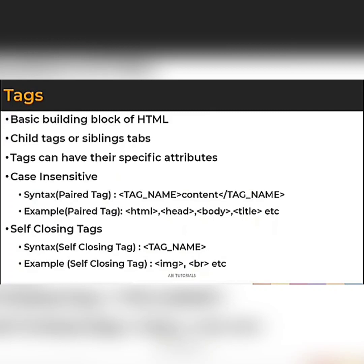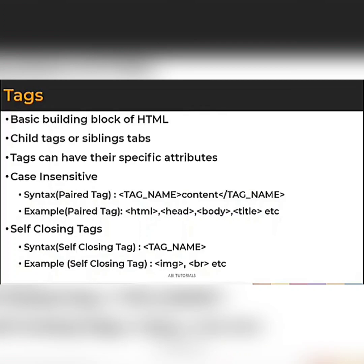A tag is the basic building block of HTML — they are also called HTML elements. An HTML document is a set of tags. Tags can enclose child tags, have siblings, and have their own attributes. Tags are case insensitive and start with a less-than sign and end with a greater-than sign. If you start a tag, you should end it as well. The end tag has an additional forward slash after the less-than sign. Such tags are called paired tags. Examples include the HTML tag, head tag, body tag, and title tag.